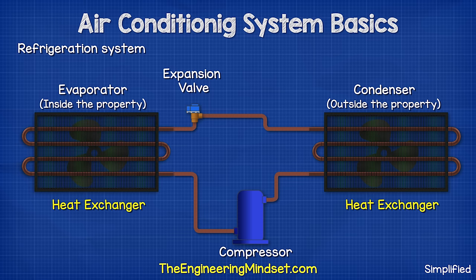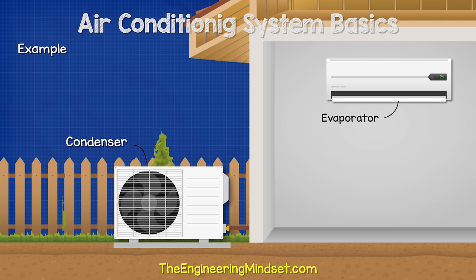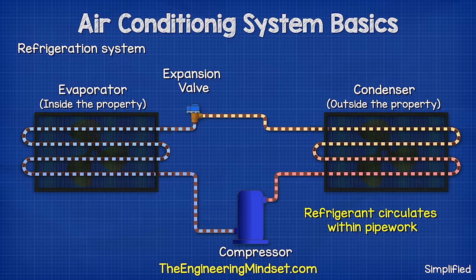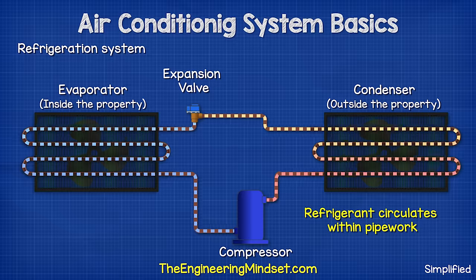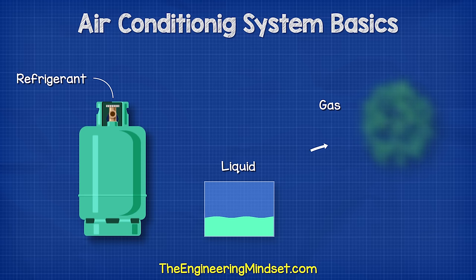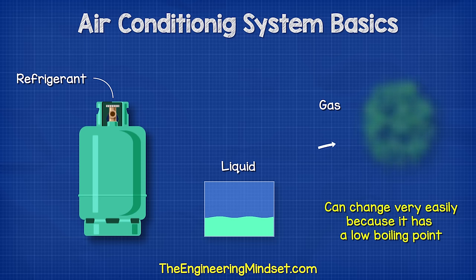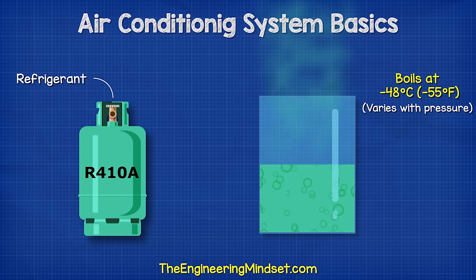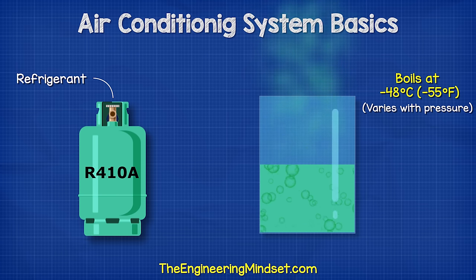The condenser and the evaporator are both heat exchangers. The condenser sits outside the property and the evaporator sits inside the room being cooled. The compressor circulates a refrigerant in the pipework which cycles between all of these components. The expansion valve regulates the flow of refrigerant. The refrigerant is a specially designed fluid which can change between being a liquid and a gas very easily, and that's because it has a very low boiling point. For example, refrigerant R410A will boil at negative 48 degrees Celsius or negative 55 degrees Fahrenheit, although this will change with pressure.